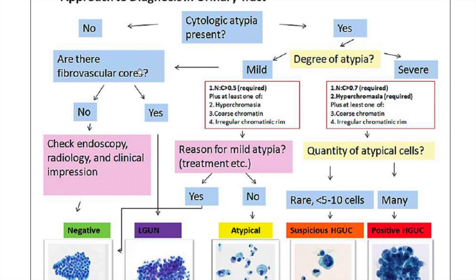Let's work our way down the left side of the algorithm. If we're assessing cytologic atypia and we're not seeing any, we're going to want to look and see if there are any fibrovascular cores. If there are, it could be a papilloma, because as we know, papillary structures are often composed of fibrovascular cores. If there are no fibrovascular cores, we're going to check the endoscopy, radiology, and clinical impression, and perhaps sign it out as negative if we're not seeing any concerning features.